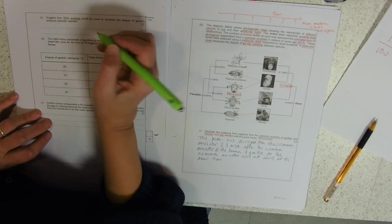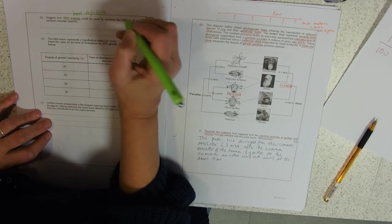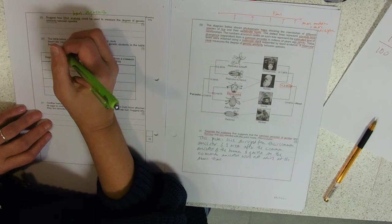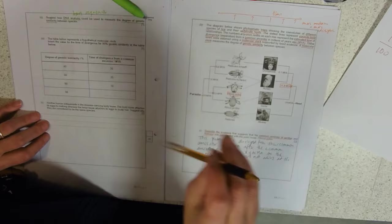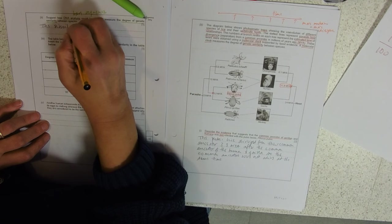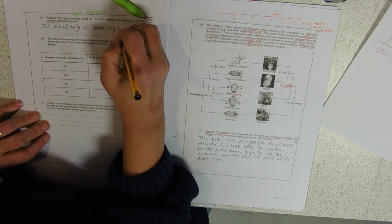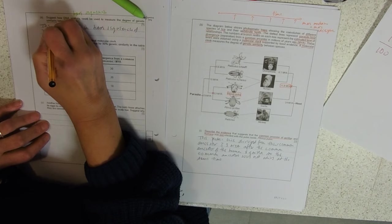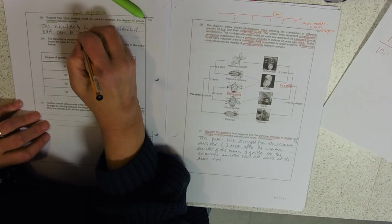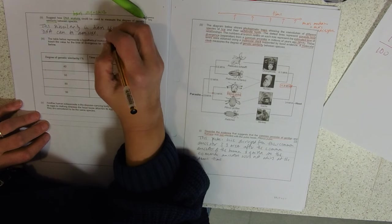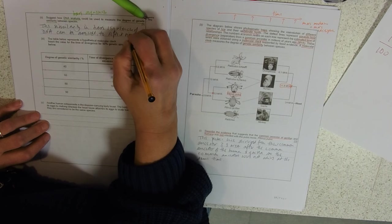Last bit: suggest how DNA analysis could be used. DNA analysis, what are we looking at here? Base sequences of DNA is used to measure the degree of genetic similarity between species. So the similarity in the base sequences of DNA can be assessed to reflect similarities in the species.